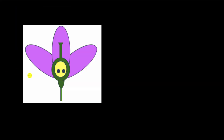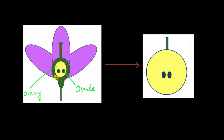A flower has an ovary in its gynoecium, which has ovules in it. The ovules house the eggs. This right here is the ovary, and these are the ovules. When an ovary matures, the ovary turns into a fruit and the ovules become seeds. The ovules are arranged inside the ovary in a particular fashion, and that arrangement of ovules is called placentation.